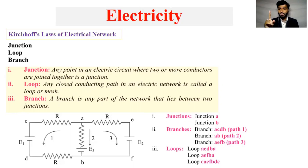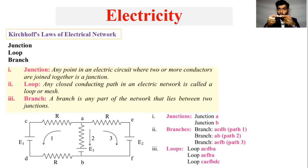So let's consider a wire and a second wire. What did we do? We have joined them. Where we have joined, what will we get? We will get a junction.